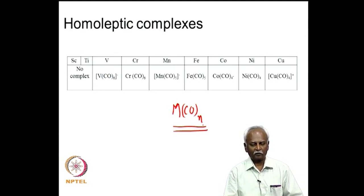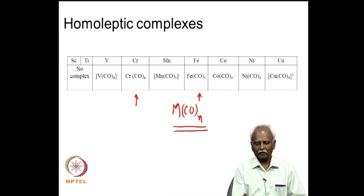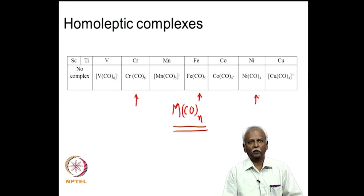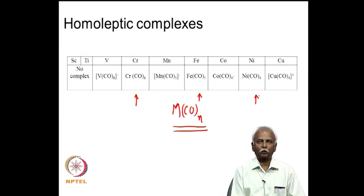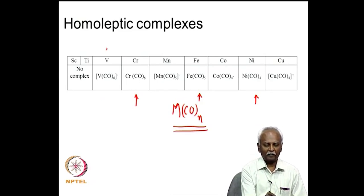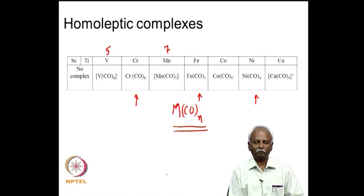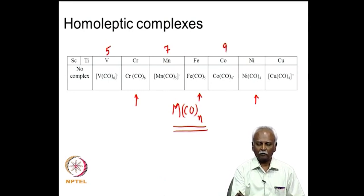Looking at this table, you will notice that for all metals with an even number of electrons — that is chromium, iron, and nickel — there are no charges on them. Since carbon monoxide is a neutral ligand, having N carbon monoxides does not add any charge to the metal, so the metal is found in the 0 oxidation state. For metals with an odd number of electrons — vanadium has 5 d-electrons, manganese has 7 valence electrons, and cobalt has 9 — these systems tend to form complexes which have a charge.